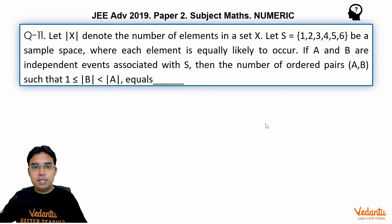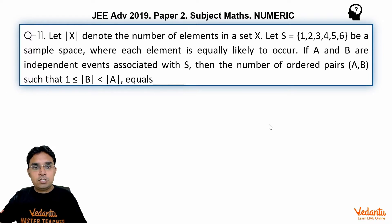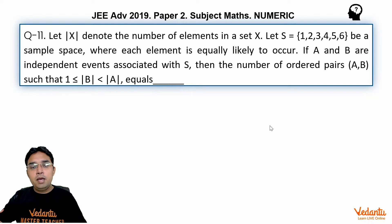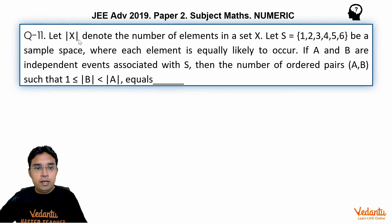Hello everyone, I am Surendra Jain, master teacher at Vedantu. I am presenting you the solutions of JEE Advanced 2019. This is question number 11 from Paper 2. This question is from the topic of probability, with the subtopic being dependent and independent events — one very important and interesting topic for JEE Advanced.